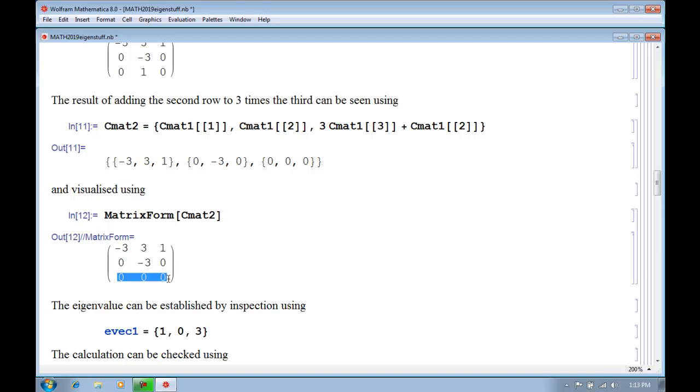And we can see that now this matrix is in upper triangular form. But not only that, but the last row consists entirely of zeros. Anyway, that means that we can choose the third variable in the eigenvector to be anything we like. And then the second element must be 0, because that equation will be minus 3 times y plus 0 equals 0. So that's 0.